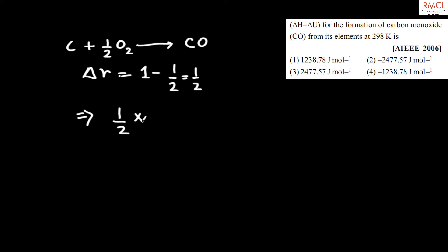Δn is 1/2, R = 8.314, and temperature is 298K. When we solve this: 1/2 × 8.314 × 298, we obtain 1238.78 joule per mole for ΔH - ΔU.